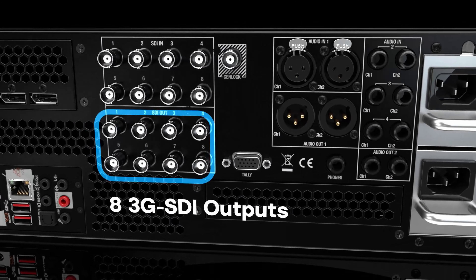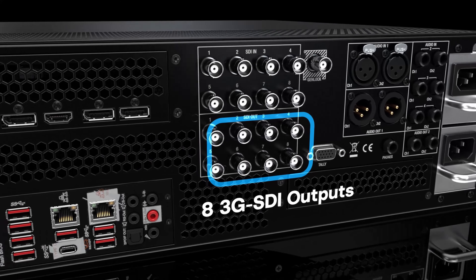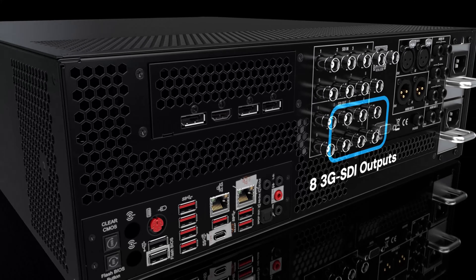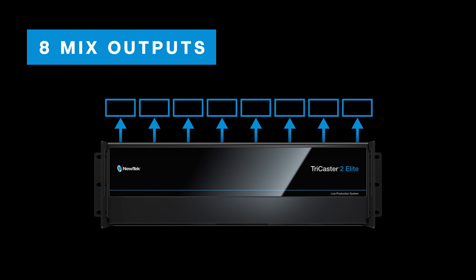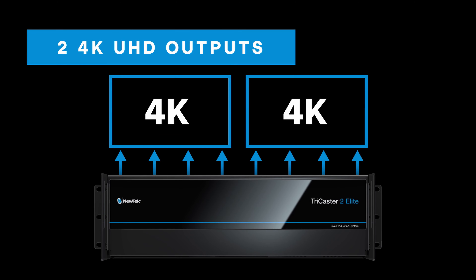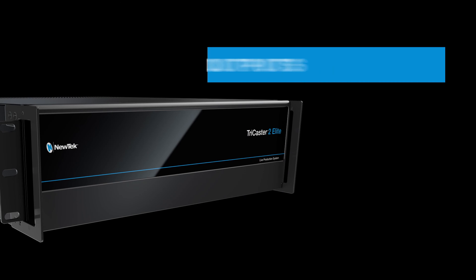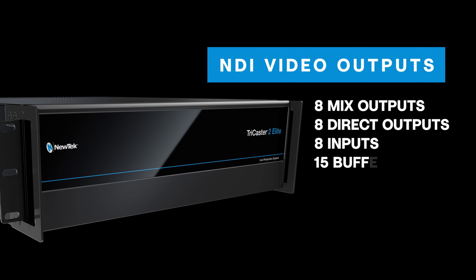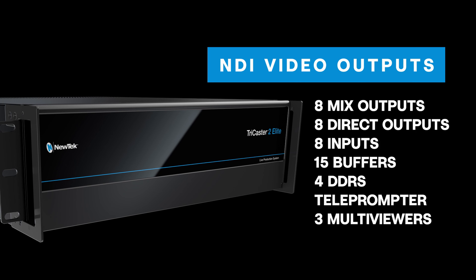Output your show through the 8 1080 60p 3G SDI hardware outputs for connecting to monitors, projectors, video walls, digital signage, and more. These connections also give you the flexibility to output 2 4K Quad Link Ultra HD connections. TriCaster 2 Elite also distributes 8 mixes along with 8 dynamically assignable video outputs as direct NDI signals across your network.